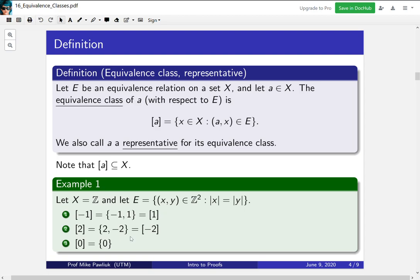Similarly, the equivalence class of two is {2, -2}. And you could also represent this as the equivalence class of minus two. Finally, the equivalence class of zero is just {0}. It's the only integer that has the same absolute value as itself. So right away, we should see that representatives are not unique. You can have many different representatives for the same equivalence class.